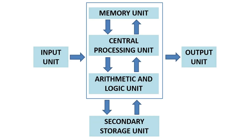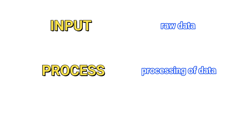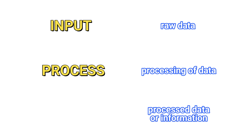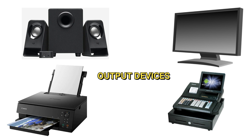The next unit is the output unit. This is considered the shipping section. Once the data — what we call the input — is already processed, it is now ready to be shipped or given back to the user as processed data or information. Raw data, which serves as our input, once processed by the computer, becomes processed data or information and is now considered our output. It may be displayed on the monitor screen, printed on paper, played on audio players, or used to control other devices.